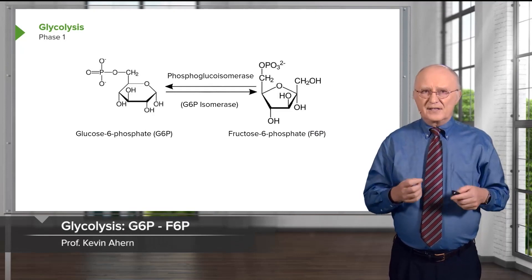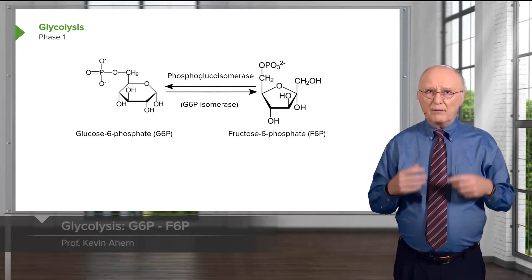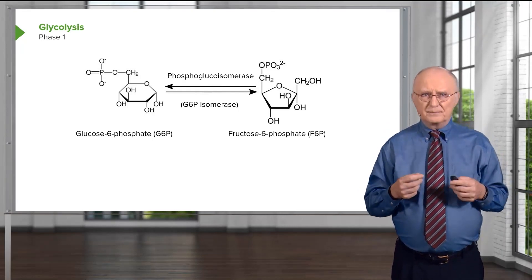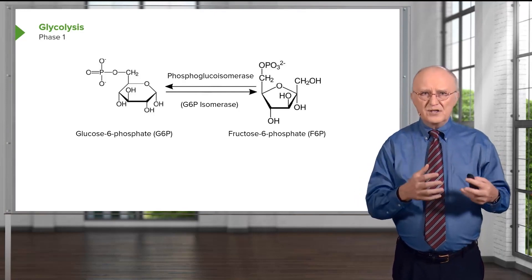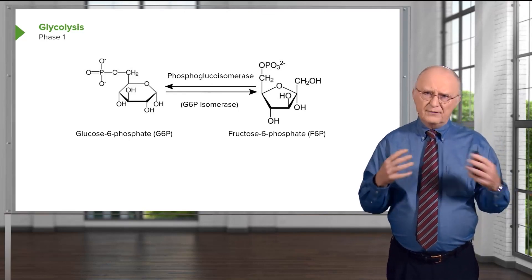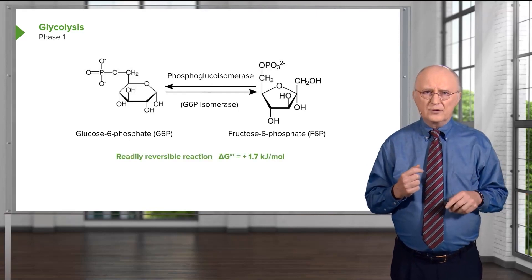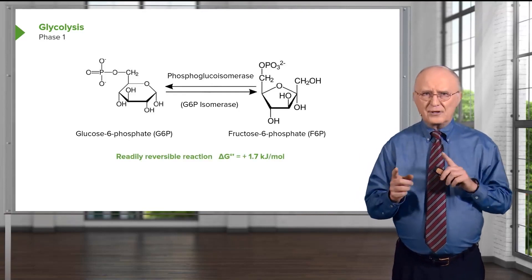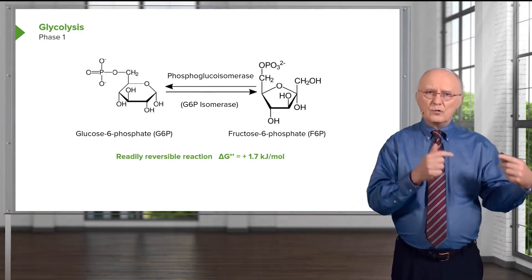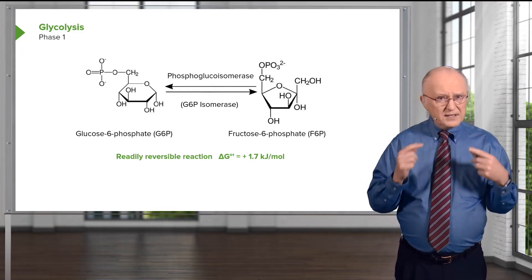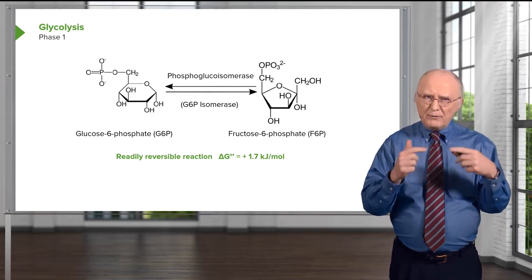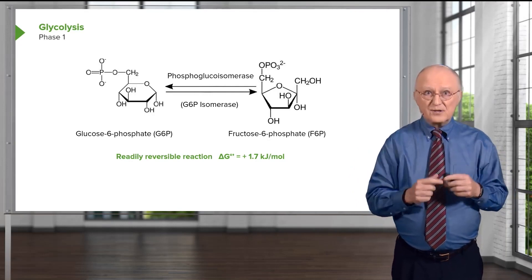In the second reaction of glycolysis, this simple reaction is catalyzed by an enzyme called phosphoglucoisomerase. As its name suggests, it's catalyzing an isomerization — simply a rearrangement of glucose 6-phosphate into a different sugar called fructose 6-phosphate. Though they look very different, fructose and glucose are fairly closely related to each other. This is a readily reversible reaction; it can go forwards and backwards, and the direction it proceeds will be a function of the concentration of these molecules. Reversible reactions are important to consider because when we go to make glucose in the process of gluconeogenesis, some reactions are run in the reverse direction — and this is one of those reactions.